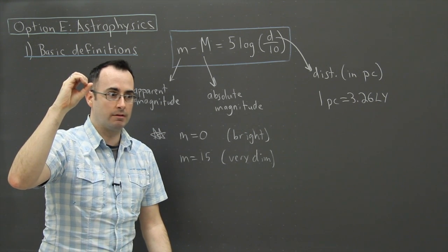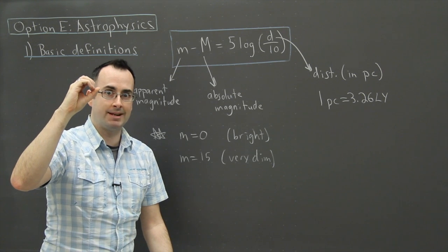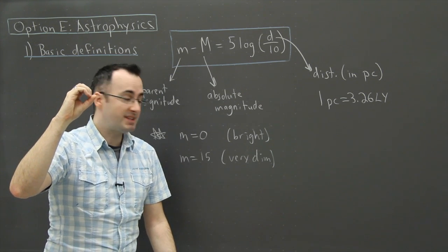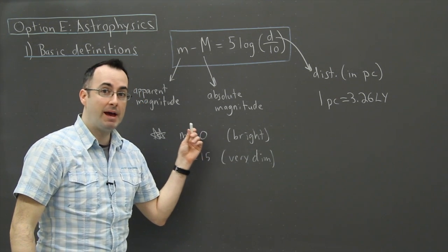Like, oops, what do we call it? It's brighter than zero. So it is possible to even have negative magnitudes.